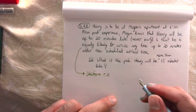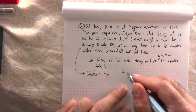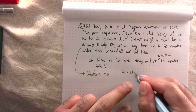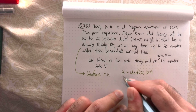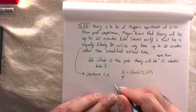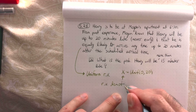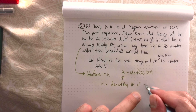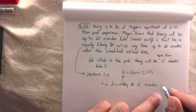Let X be a uniform random variable on the interval from 0 to 20. X is a random variable denoting the number of minutes Henry is late.